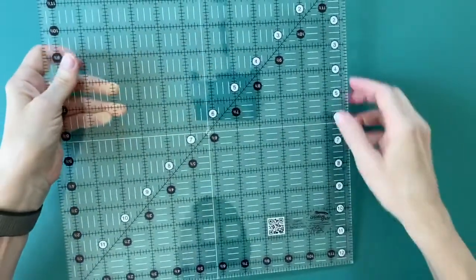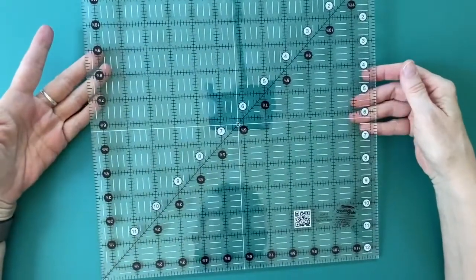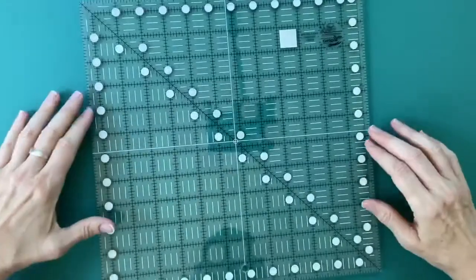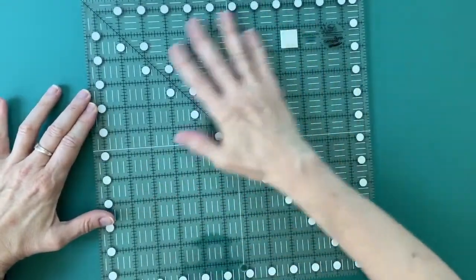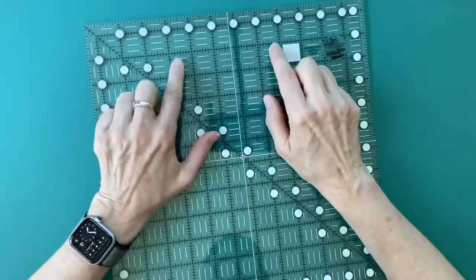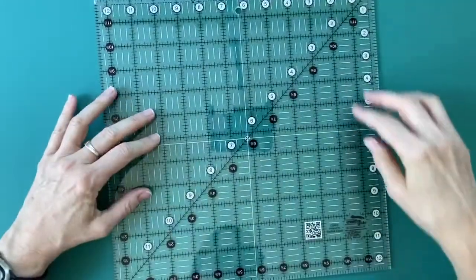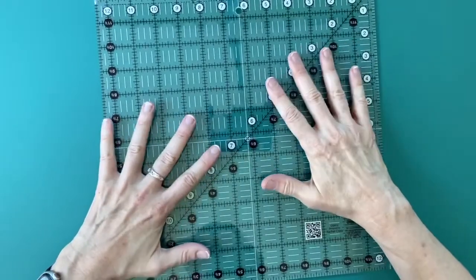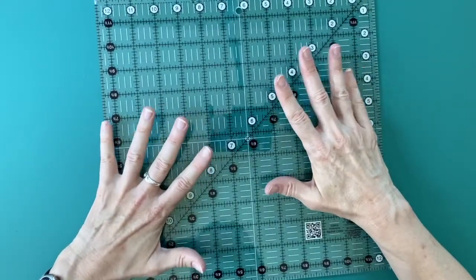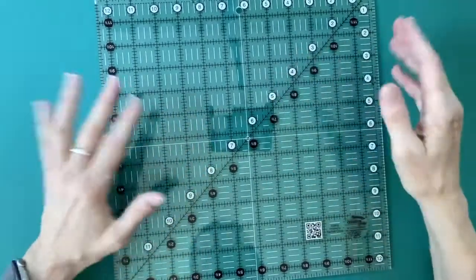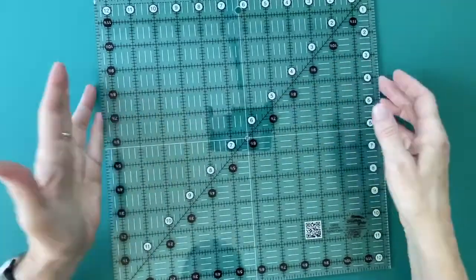Here's one. This is a Creative Grids ruler. It's also a 12 and a half and it has some grippies on the back. So there are textured circles on the back that help to grip it. A lot of people like Creative Grids. They also have six and a half by six by 12, et cetera, et cetera, rulers. They've got a lot of rulers that have various grippy things on the back of them. So that would be number two.